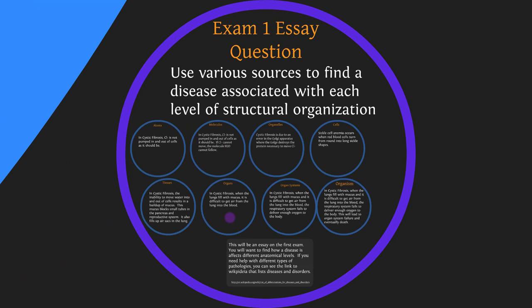For testing, you'll always have multiple choice because you need to get good at it — ultimately your ability to practice in your field may come down to a boards exam in multiple choice format. The first essay on exam one asks you to go out and find diseases associated with each level of structural organization: atoms, molecules, organelles, cells, tissues, organs, organ systems, and organisms. It doesn't have to be the same disease — find a different disease beginning with a problem at each level.